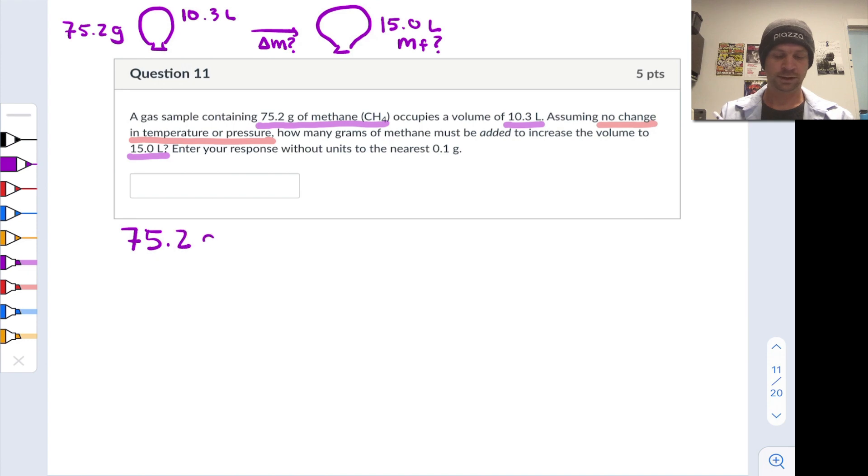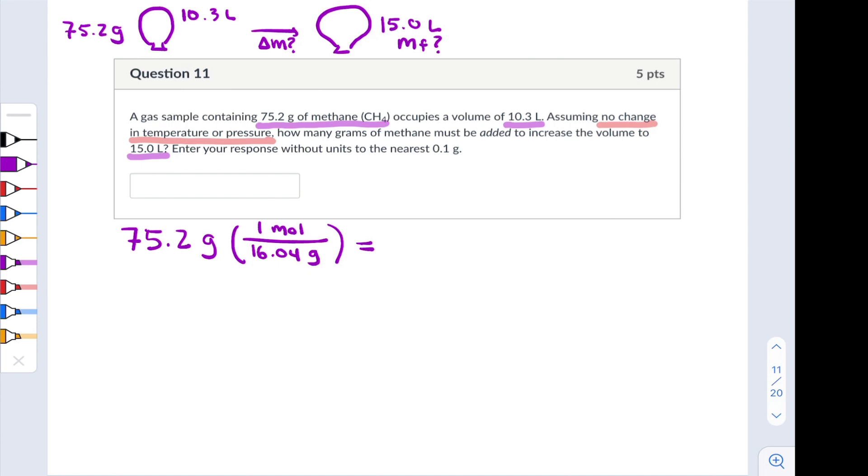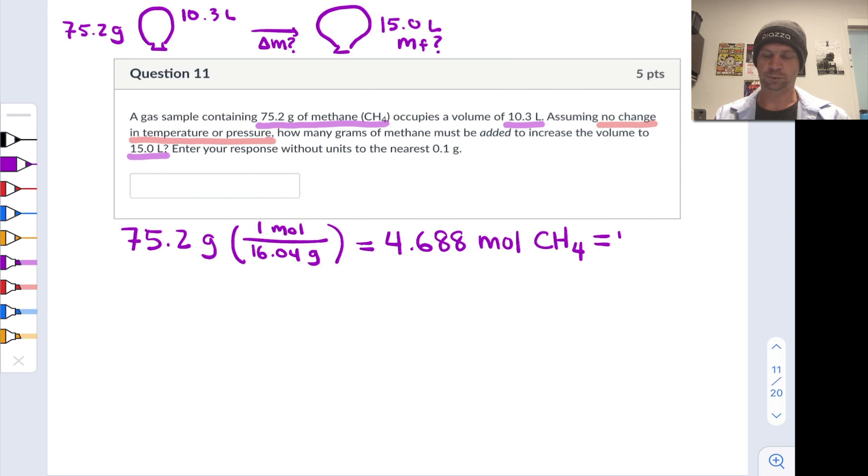75.2 grams of methane - the molar mass of methane is about 16.04 grams per mole, so we can calculate the moles by dividing, and we end up with 4.688 moles of CH4. Let's think about this as our initial number of moles, n sub i.